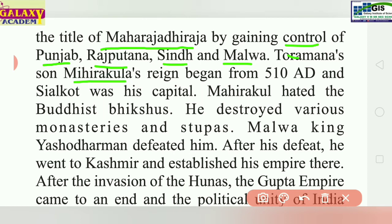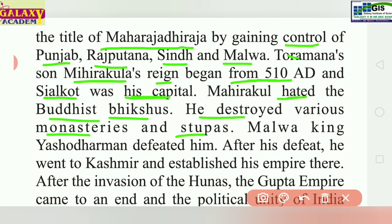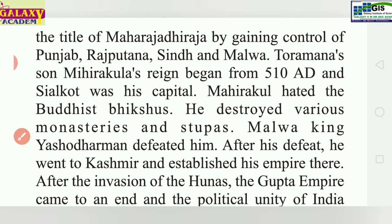Toramana's son Mihirakula's reign began from 510 AD, and Sialkot was his capital. Mihirakula hated Buddhists greatly and destroyed many of their stupas and monasteries. The Malwa king Yasodharman defeated Mihirakula, and after his defeat, Mihirakula went to Kashmir and established his empire there.